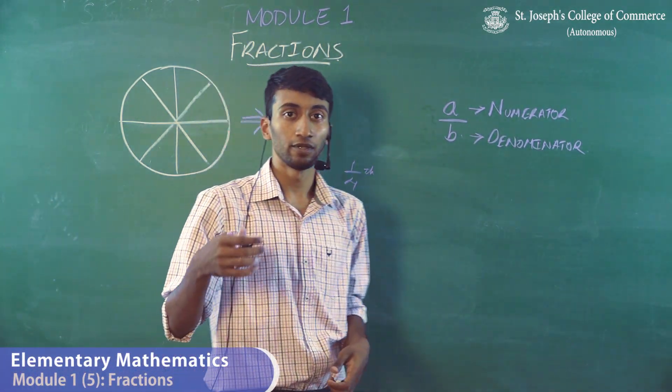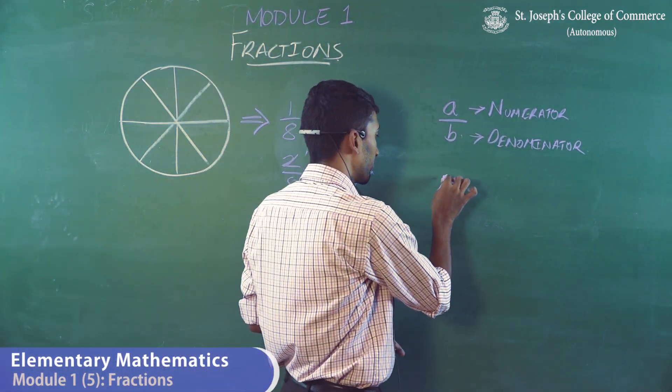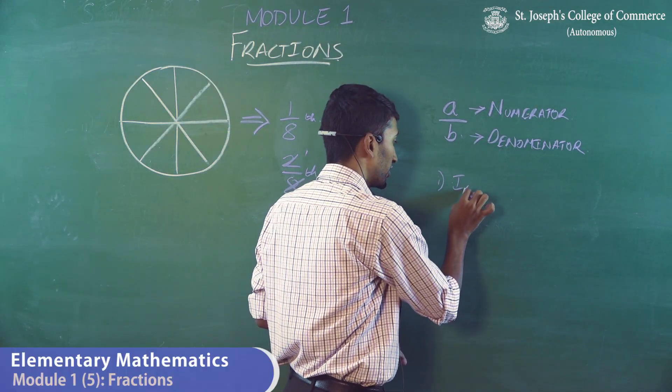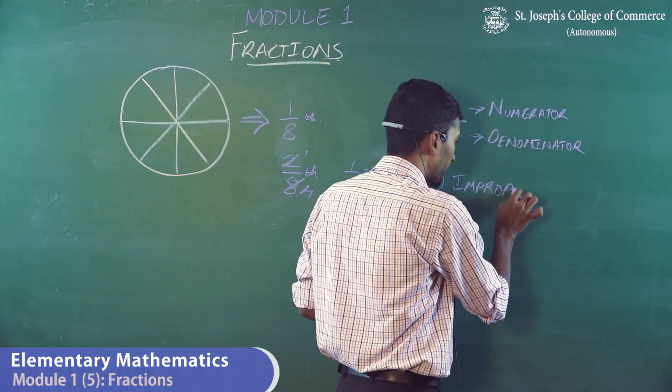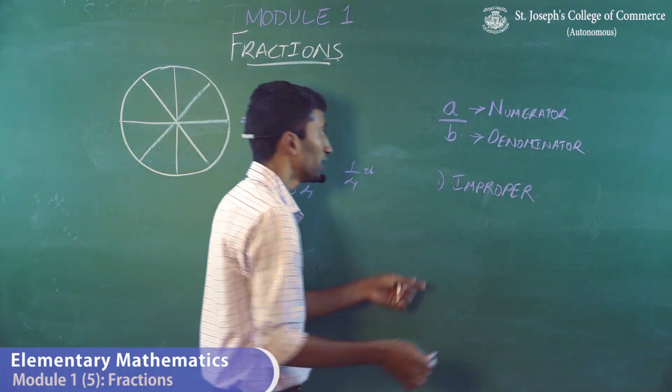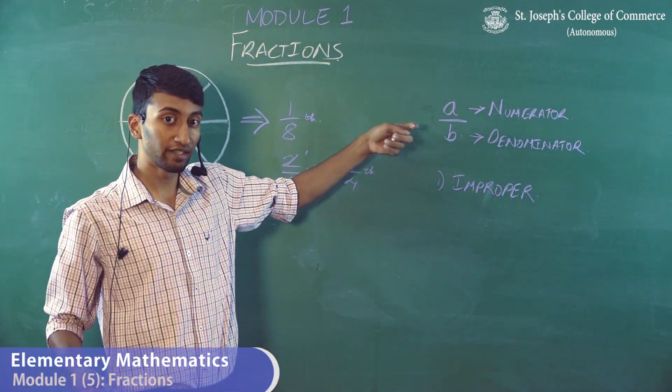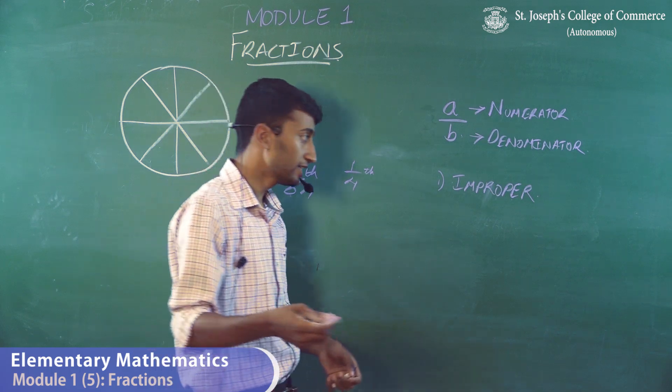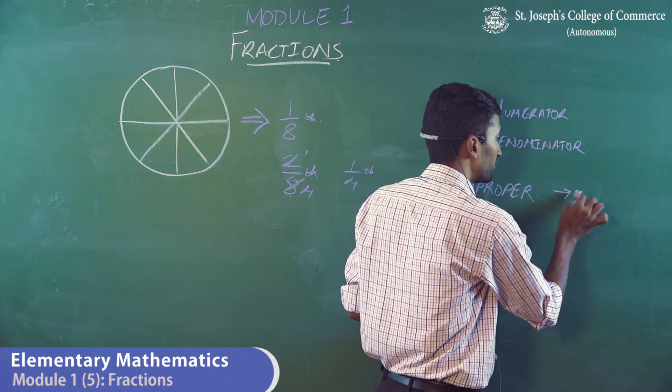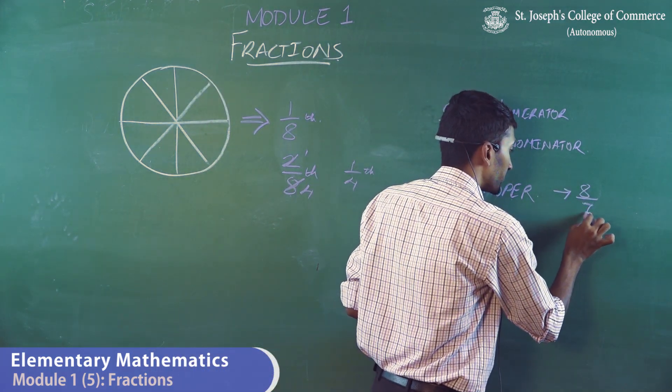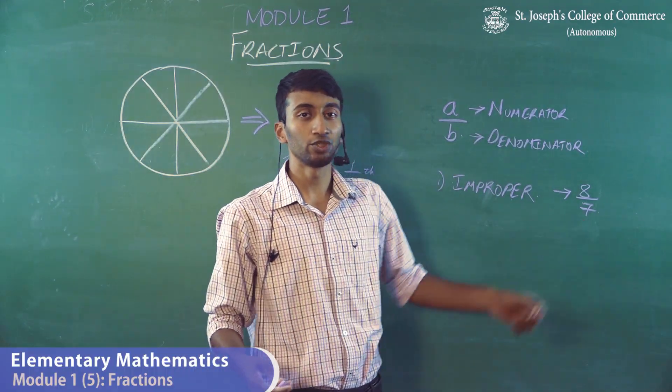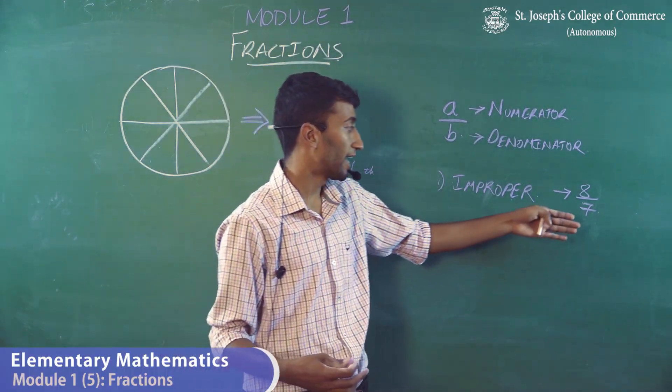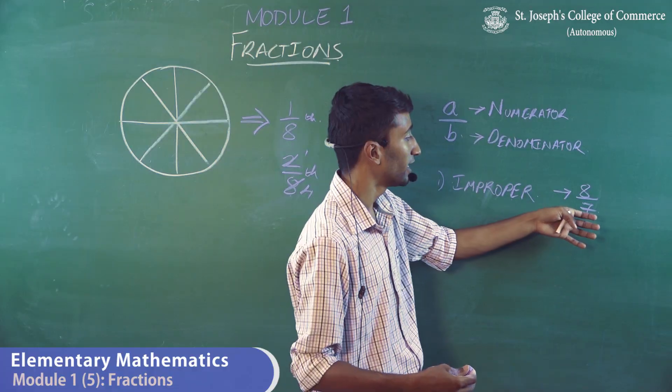So now, fractions are of three types. There is improper fraction, wherein improper fraction is where A is greater than B. So A is greater than B, that means, for example, eight by seven. This is an improper fraction which we generally do not write as an answer.